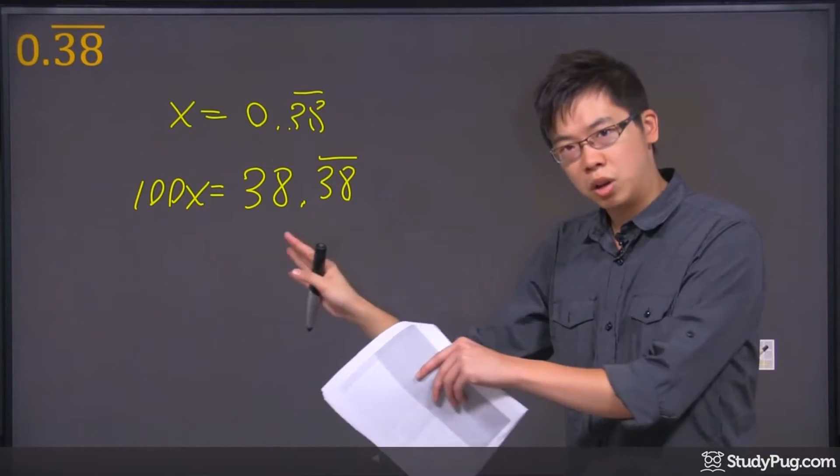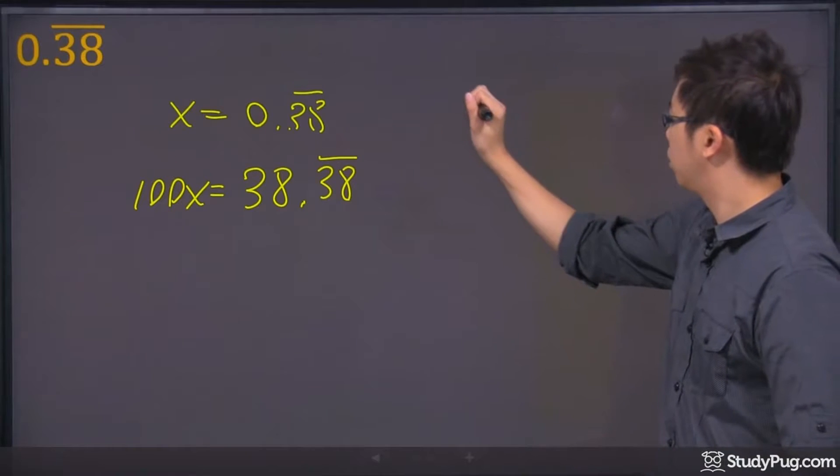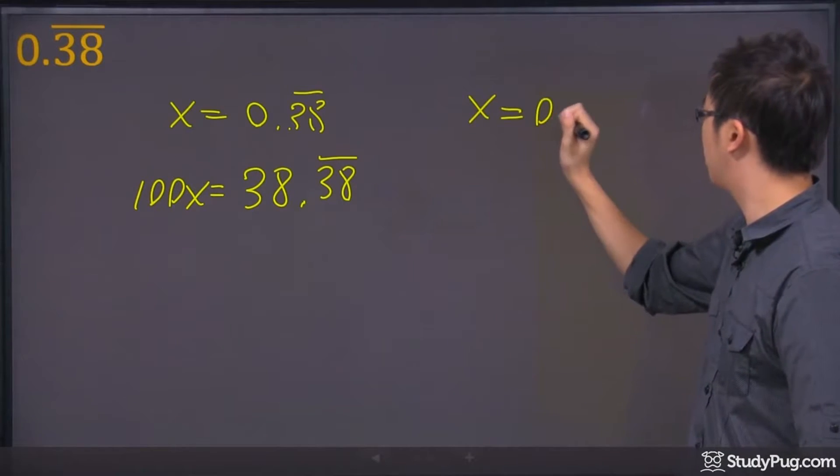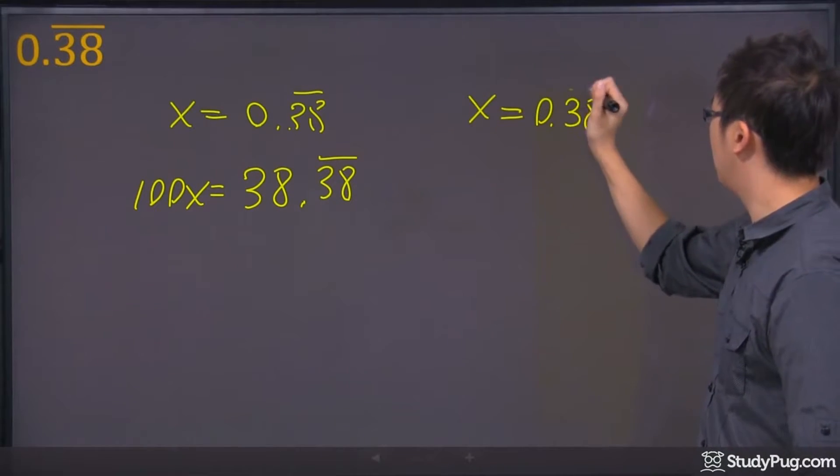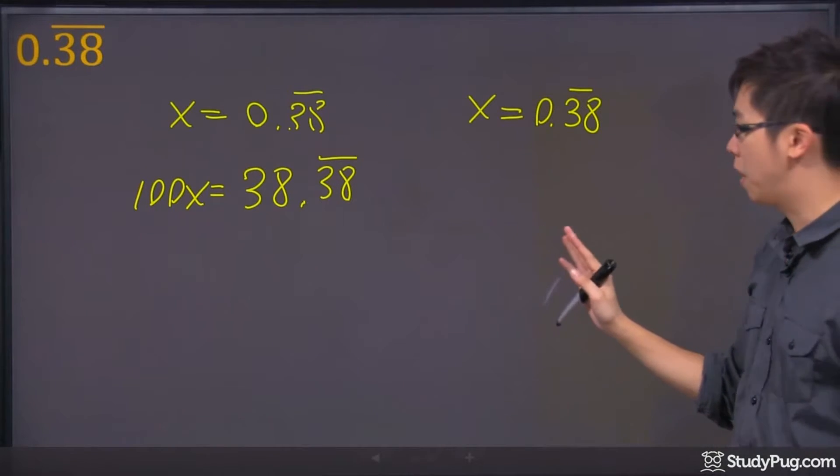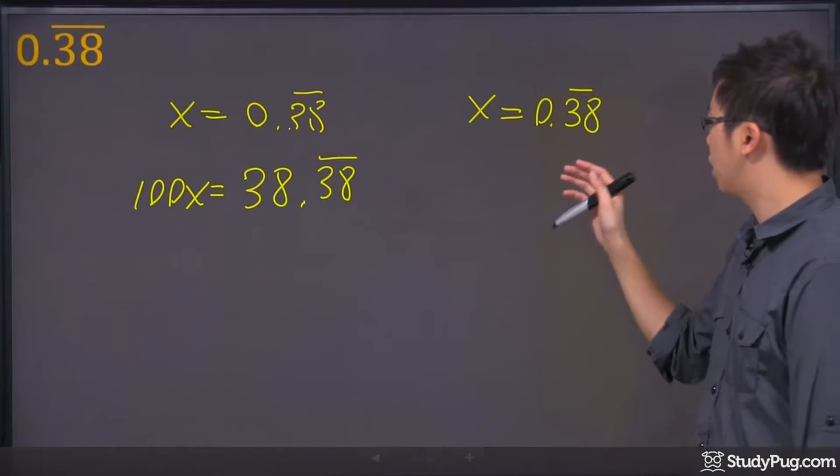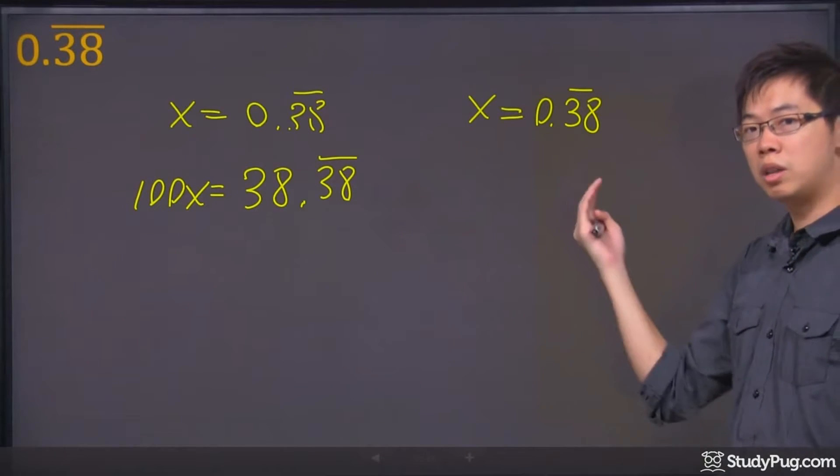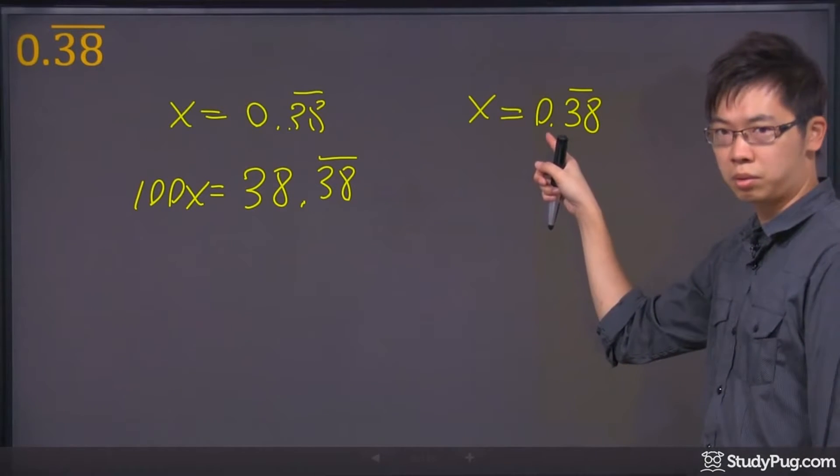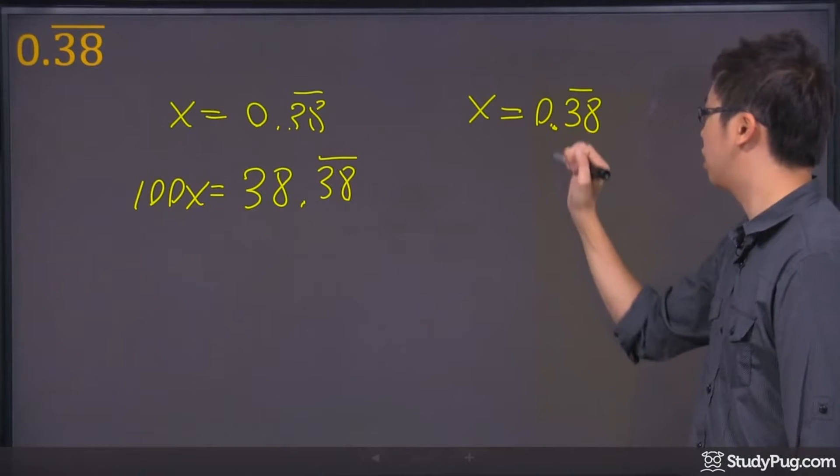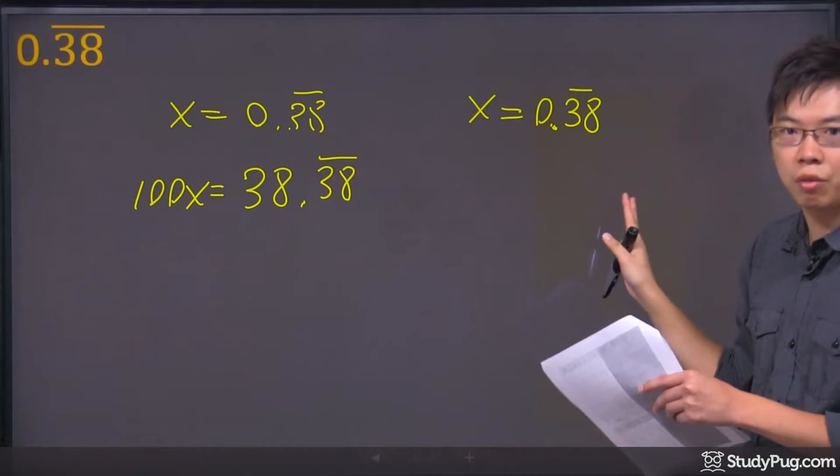So, I'm going to try it one more time, writing down the 0.38 repeating. It's just copying down the question. But this time, we're going to keep the repeated decimals on the right side of the decimals. In this case, it's already in that kind of format.